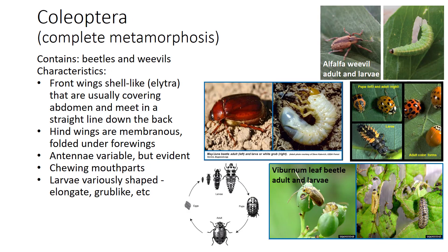Moving into our orders that have complete metamorphosis, these orders have several larval stages and a pupal stage before reaching adulthood. The adult and larvae often eat different foods even if on the same plant, such as the viburnum leaf beetle larvae eating the leaves while the adults eat the fruit.